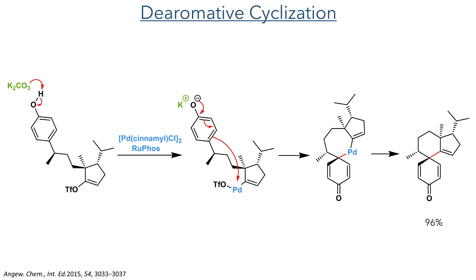The newly revealed phenol was required for the de-aromatative cyclisation. In this reaction, it is deprotonated by potassium carbonate and the palladium complex then undergoes oxidative insertion into the triflate bond. This is then attacked by the carbon alpha to the phenolate on the aromatic ring, and a reductive elimination of this complex forms the desired quaternary centre in a 96% yield.